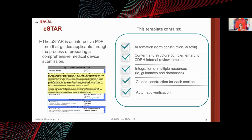Another advantage — though a double-edged sword — is the eSTAR submission system. On one hand, it takes a lot of the guesswork out of assembling a submission for the agency. It has extensive help text to identify the types of information FDA expects, links to guidance documents, and a completeness verification. It also interfaces directly with the internal templates the FDA uses to evaluate the submission.